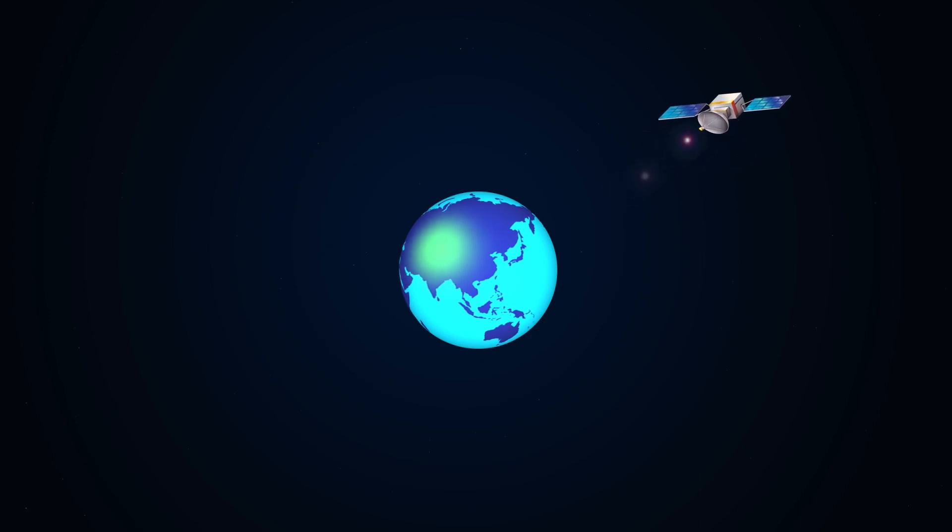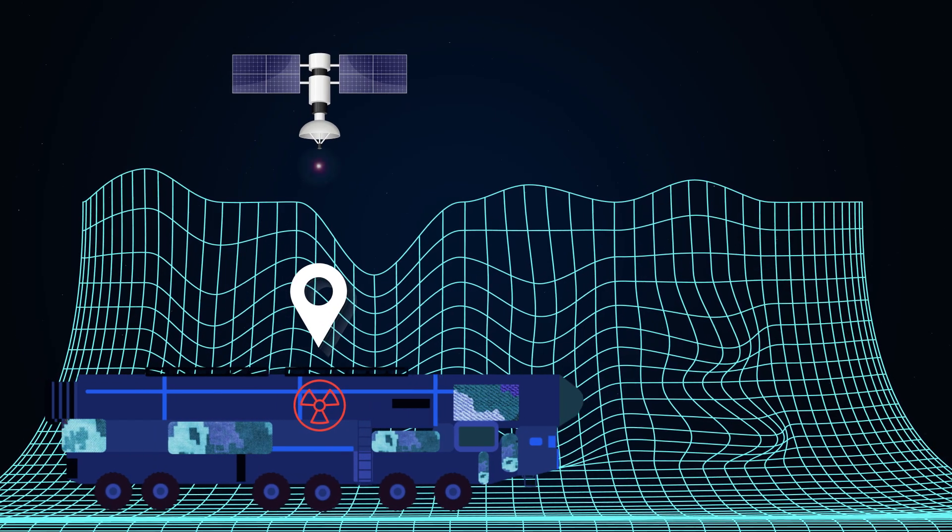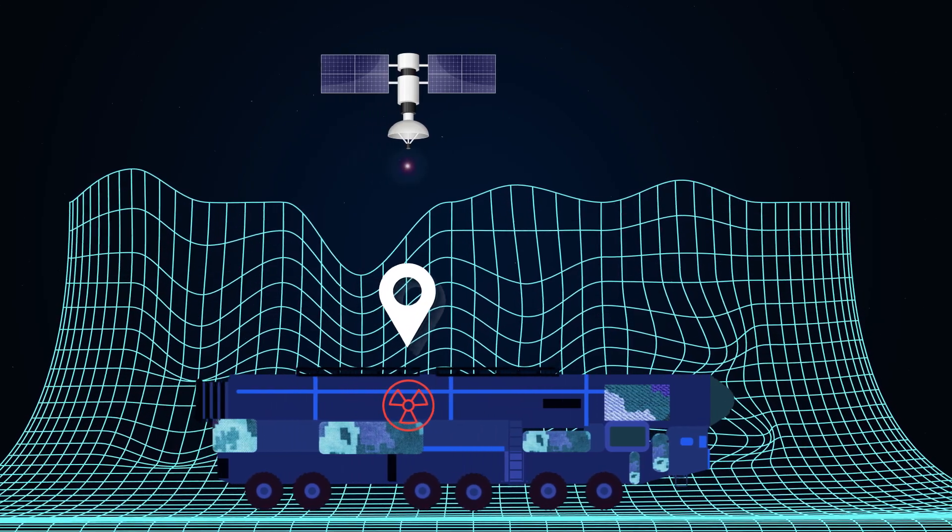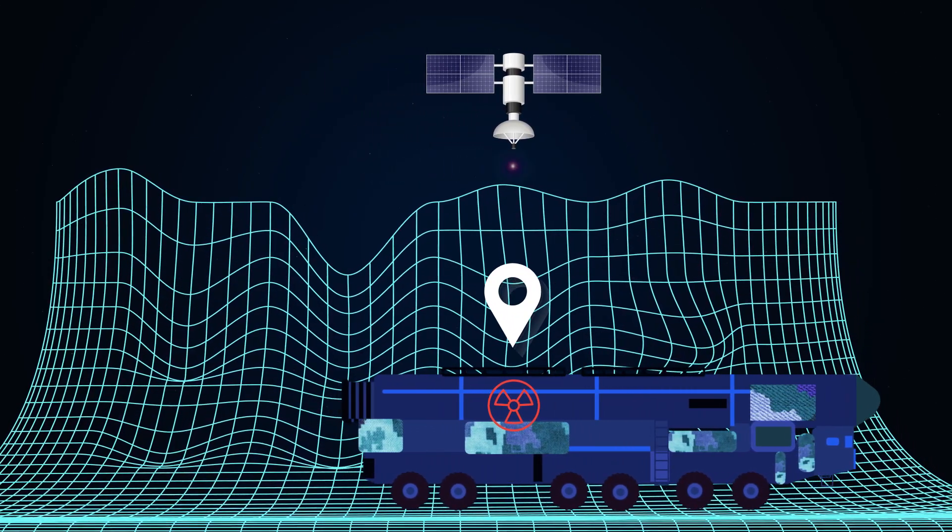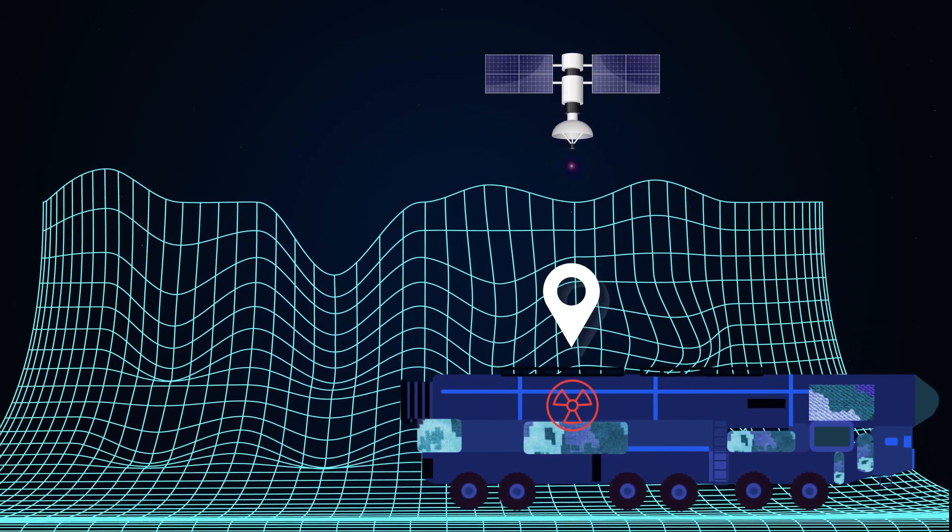An attacker might try to use satellites to locate hidden nuclear launchers. Think of it like a game of hide-and-seek. The seeker can track a missile launcher's location by observing it from above.